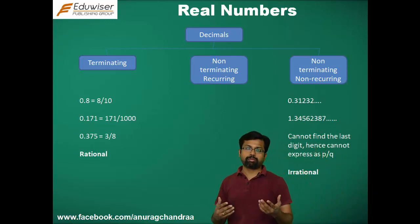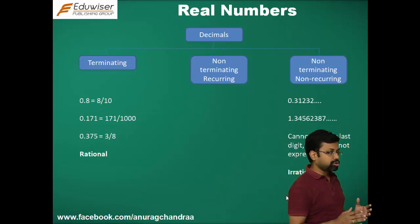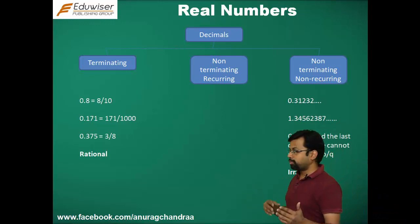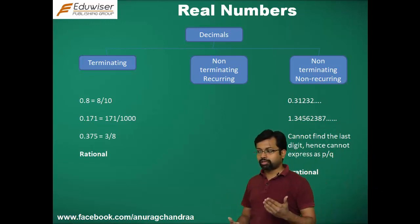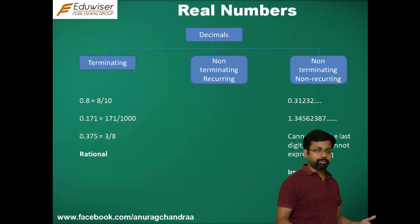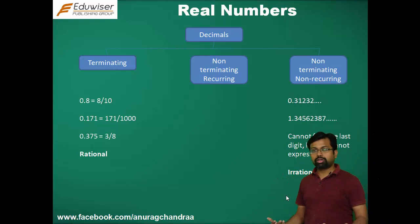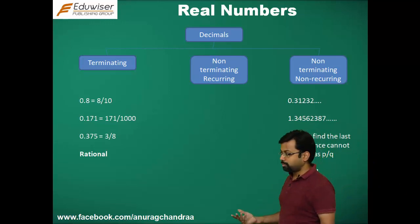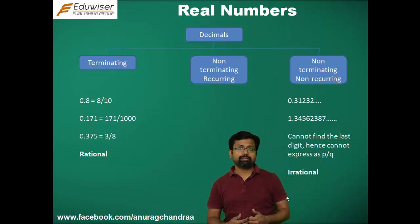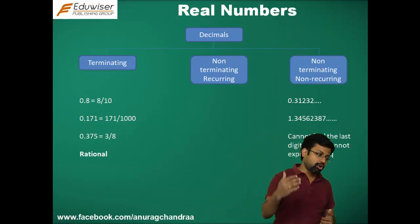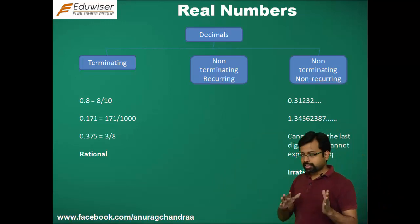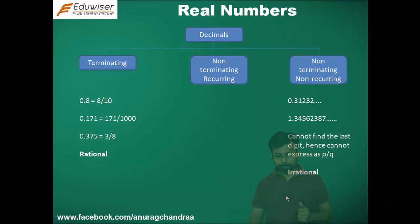The third type — non-terminating recurring — may at first look like an irrational number because it also goes on and on without ending. Someone might ask: if it doesn't stop, how can you divide it by any number and arrive at a form P by Q? How can you say with certainty that a non-terminating recurring number is rational? So let's see how we prove that.